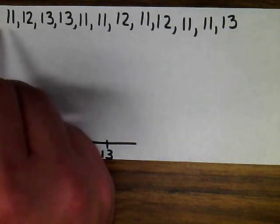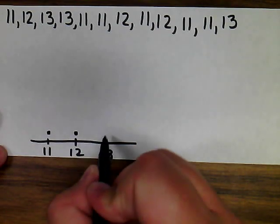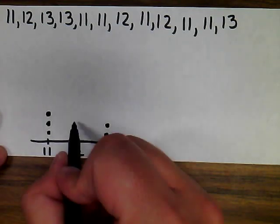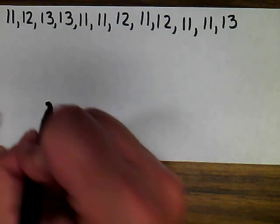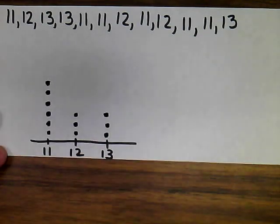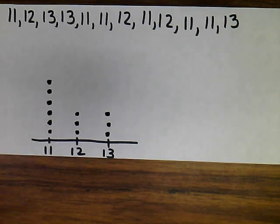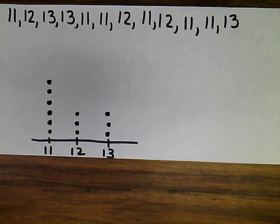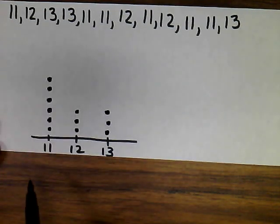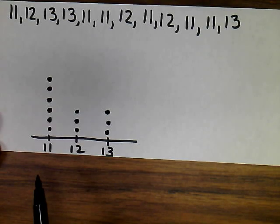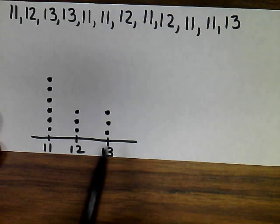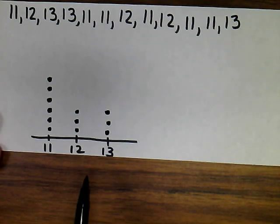I'm going to put a dot for each value: 11, 12, 13, 11, 11, 12, 11, 12, 11, 11, 13. I tried to make all the dots the same size and equally spaced to make it easy to compare, and you can clearly see that 11 is the most popular answer. It also orders my numbers so I know there are 6 elevens, 3 twelves, and 3 thirteens — useful for finding the median, mode, or other statistics.